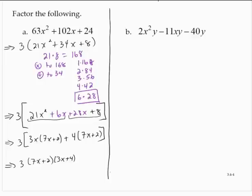2x squared y minus 11xy minus 40y. All right. So notice that we have a common factor of y. So I'll write this first as y times 2x squared minus 11x minus 40. Now I will use the AC method.